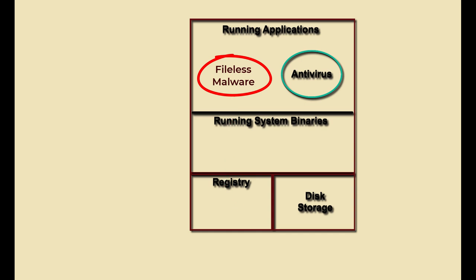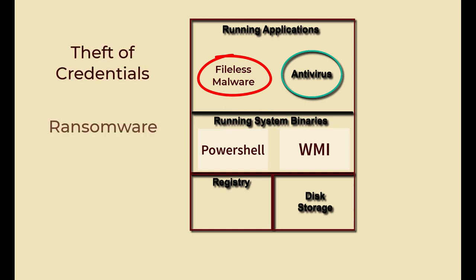The fileless malware uses legitimate, trusted applications already installed and running. Typical applications used include PowerShell and Windows Management Instrumentation, WMI. TAs can also use vulnerabilities in trusted applications to achieve attack objectives, including theft of credentials, implementation of ransomware, and data theft. Some fileless implementations, sometimes called vapor worms, can spread across the network very quickly like any other worm, infecting all vulnerable devices. The rest of the kill chain steps occur primarily the same for both file-based and fileless attacks, so what I cover in the rest of the video applies to all attacks, especially well-obfuscated Advanced Persistent Threats, or APTs.